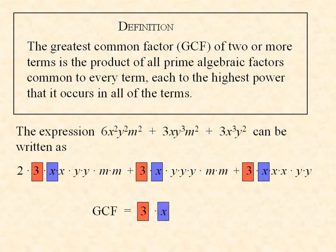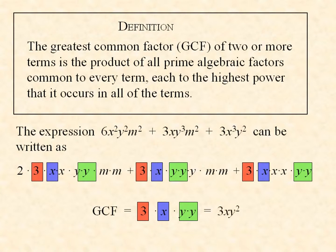We look at the y's. Each of the terms contains at least two y's. We cannot go with more than two y's, because the first and third terms only contain two y's, so we include two y's in the greatest common factor. Then we look at the m's. The last term does not contain any m's, so we finish constructing the greatest common factor, and we can write that as 3xy².